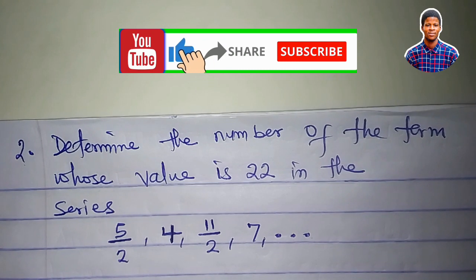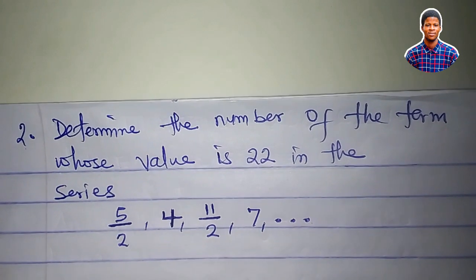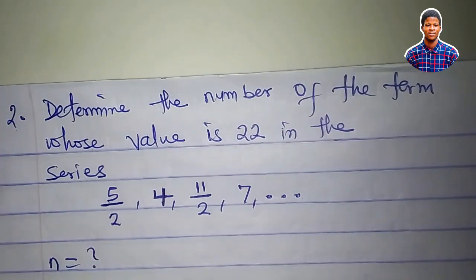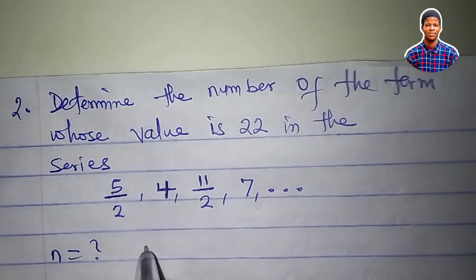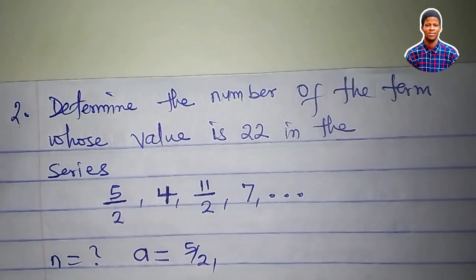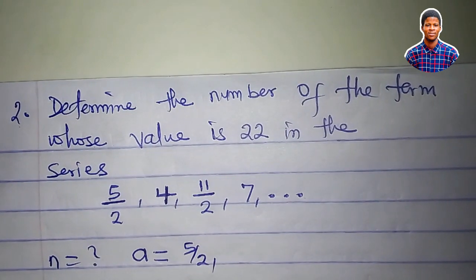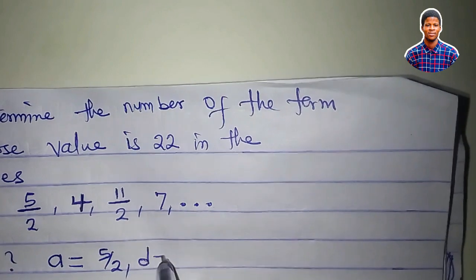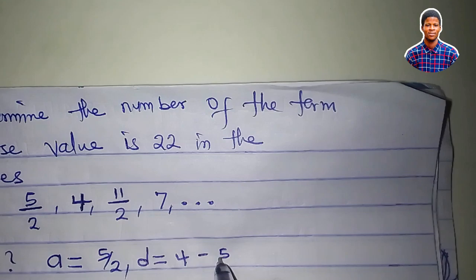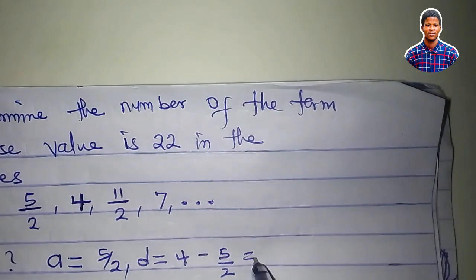Now, this is the second question. It says, determine the number of the term whose value is twenty-two in this series. What they are asking us to find is n, the number of the term. We can see that the first term is five over two. What is the common difference? The common difference is second term minus first term. Four minus five all over two.